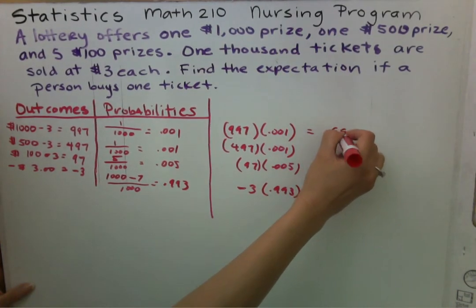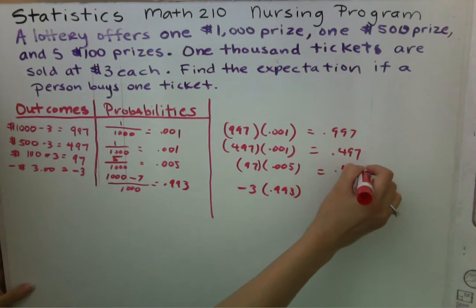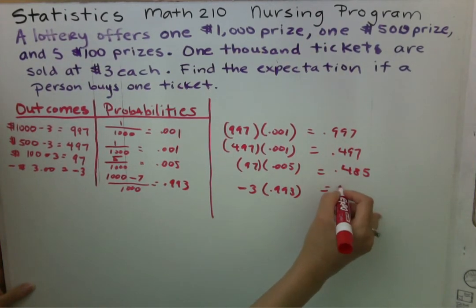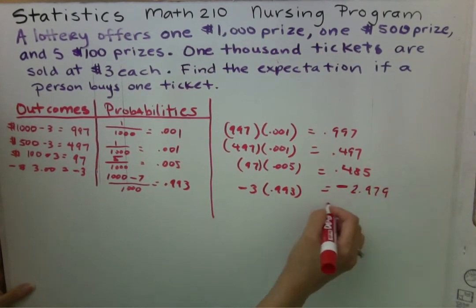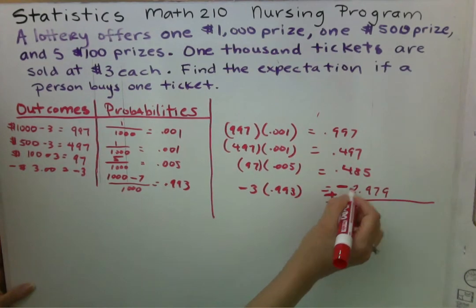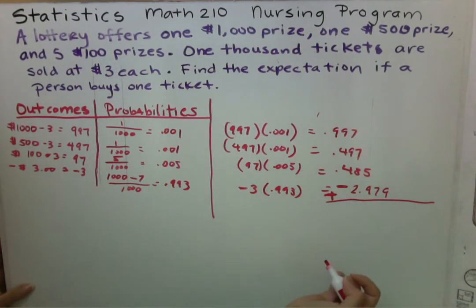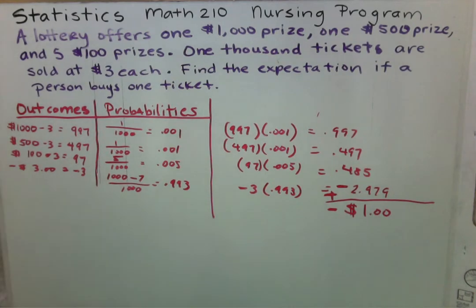Using your calculator, you'll get 0.997, 0.497, 0.485, and negative 2.979 — it's very important to remember that last one is negative. Then you add all of these together, and of course subtract by that negative value, and you will end up with negative one dollar. That is your expectation. Be sure to review this video a few times to familiarize yourself, and you can contact me if you have any questions.